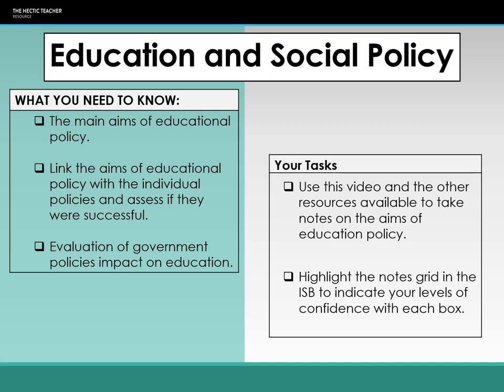That brings us to the end of the first part of the education and social policy lecture. We've covered marketisation and raising standards, and looked at some of the policies governments introduced to achieve those aims. Whether you believe those policies achieved their aims is up to you — you need to weigh up whether the intended aim was achieved or whether it didn't quite hit the mark. In the next lesson we'll look at economic equality and economic efficiency as the other two aims of social policy, examining what they mean and which policies were implemented to achieve those aims.